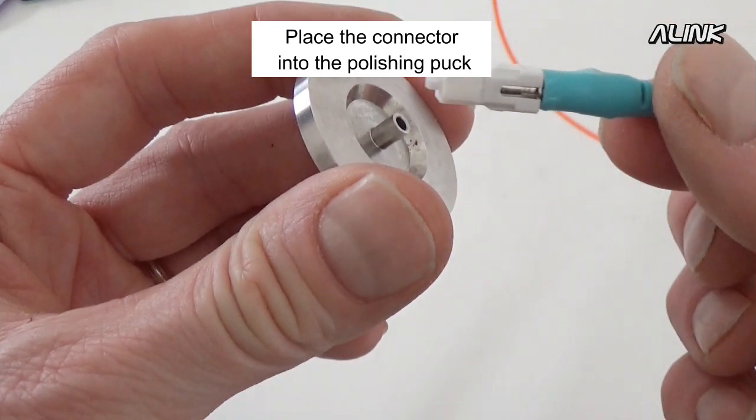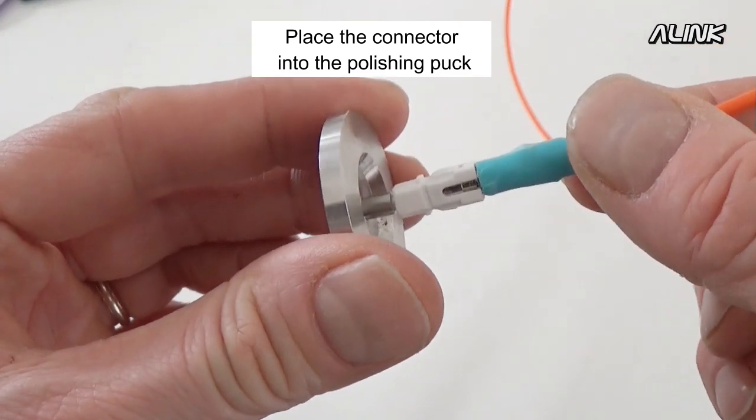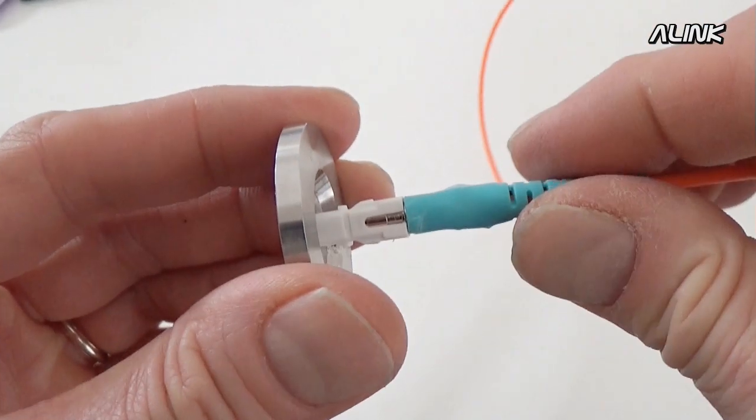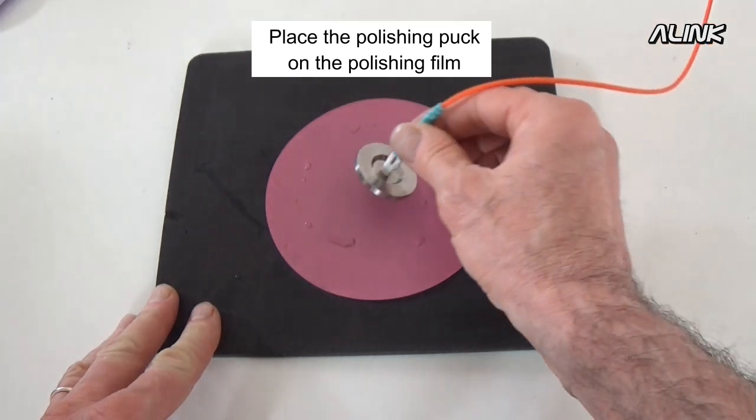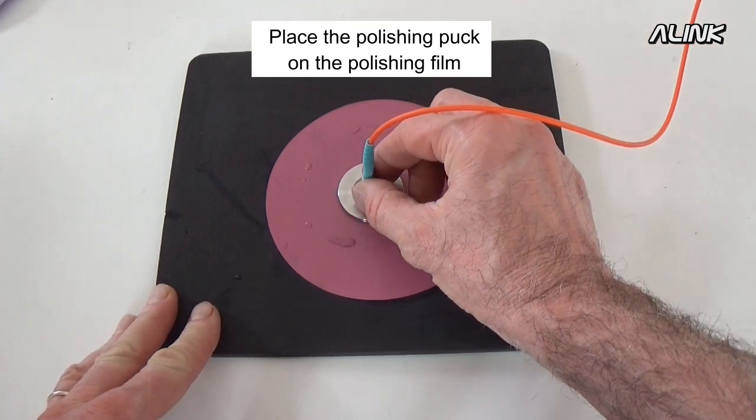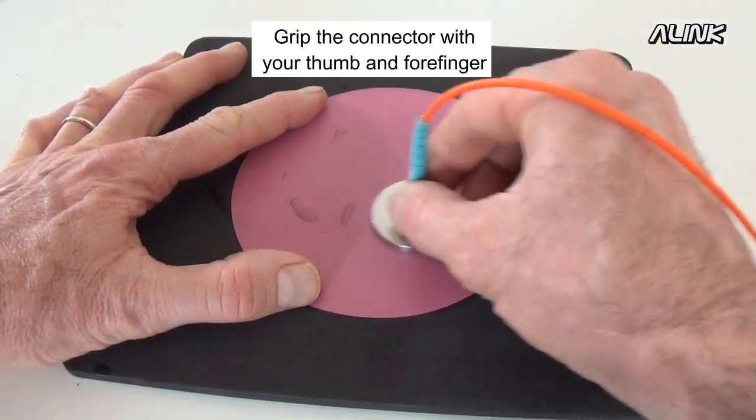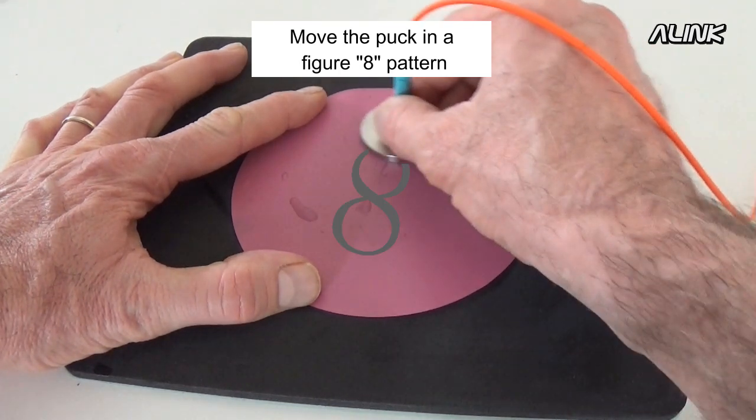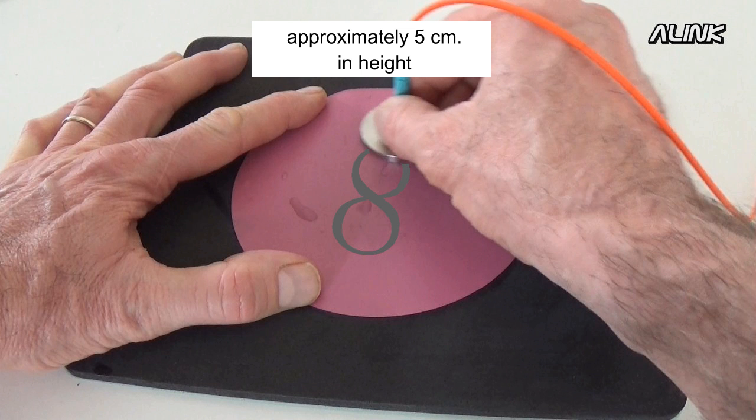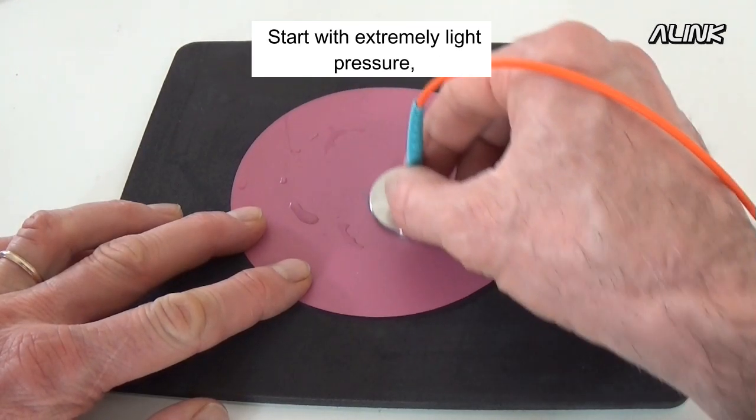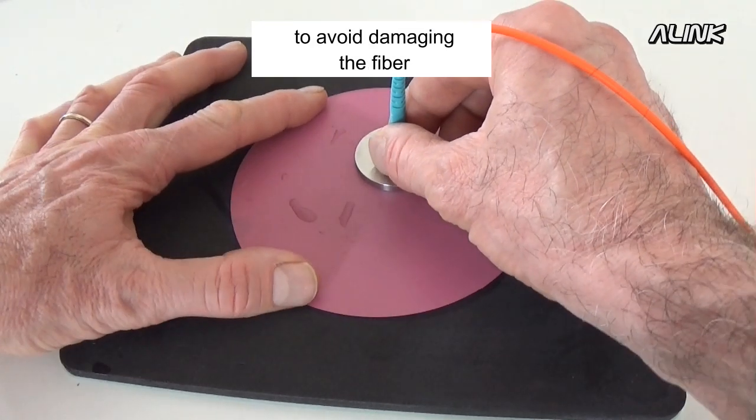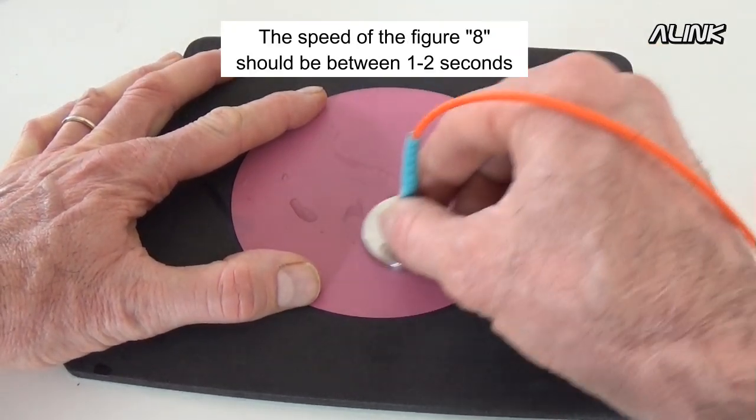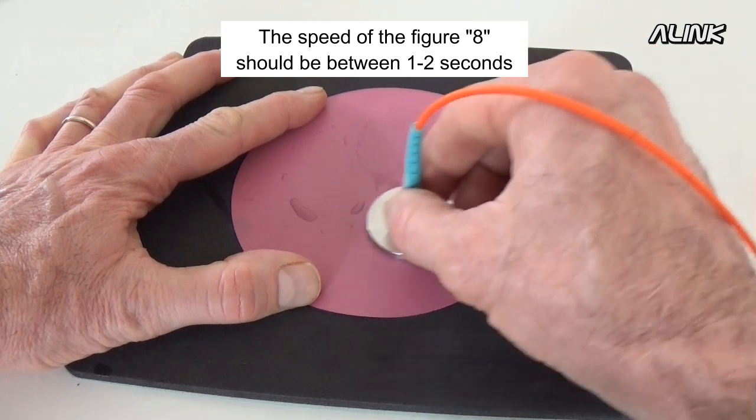Place the connector into the polishing puck. Place the polishing puck on the polishing film. Grip the connector with your thumb and forefinger while gently resting them on the puck. Move the puck in a figure-8 pattern, approximately 5 centimeters in height. Start with extremely light pressure to avoid damaging the fiber. The speed of the figure-8 should be between 1 and 2 per second.